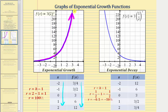Looking at the function on the right, the base b is between zero and one, so we have exponential decay — a function that decreases at a constant percentage. Because the base b equals one half, r equals one half minus one, which equals negative one half. The growth rate is negative 50%, giving us a decay rate of 50%. This is the halving function.